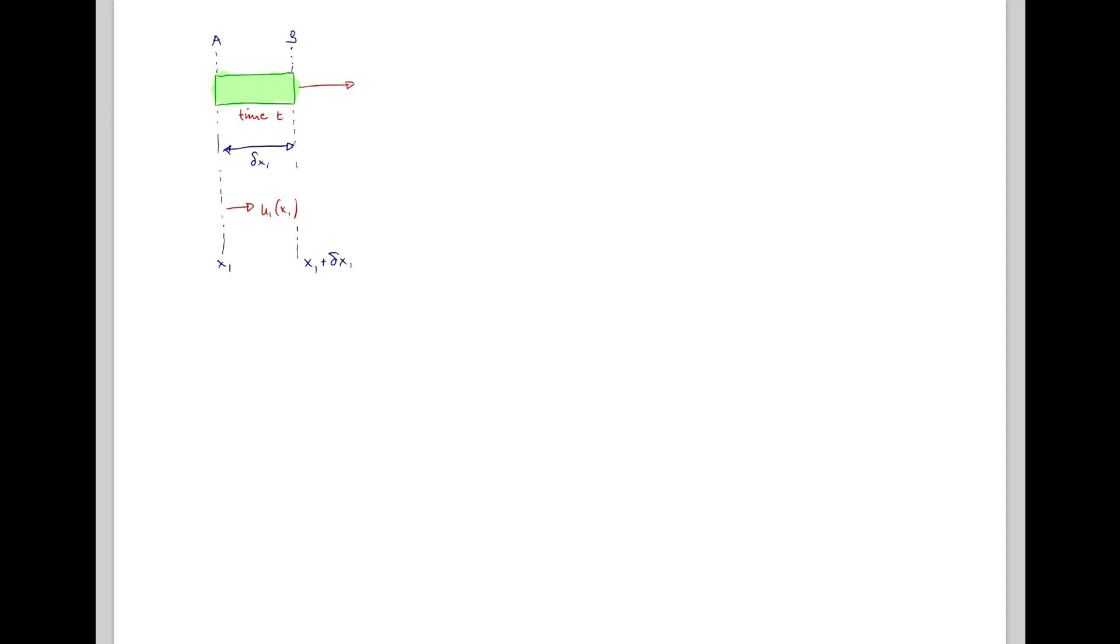Now at location x1 plus delta x1, the velocity might be slightly different. So this is u1 at x1 plus delta x1, and we can perform the Taylor series expansion that we've done in the past to write this as u1 plus delta x1 du1/dx1.